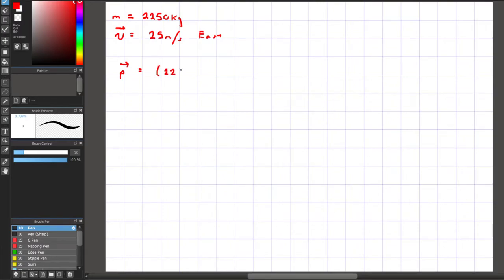When we multiply 2,250 kg by 25 m per second east, we get a momentum of 56,250 kg m per second east. A couple of things to note here.